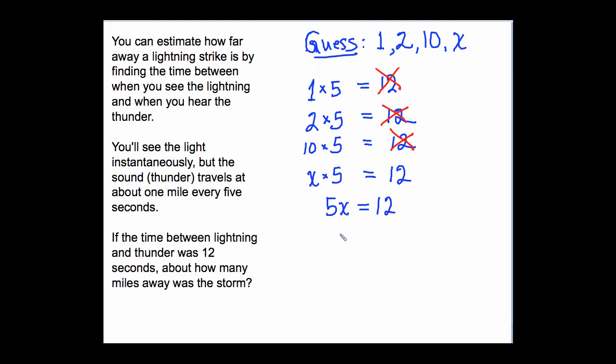And x, our distance, equals 12 over 5, or 2.4 miles. Now let's check. 2.4 times 5, so 5 seconds per mile, and that will get you 12 seconds. So the answer is correct.